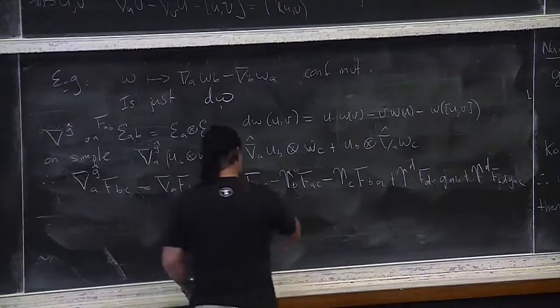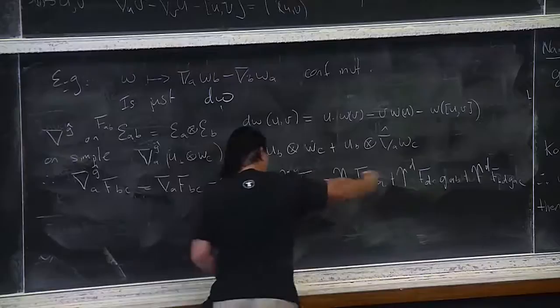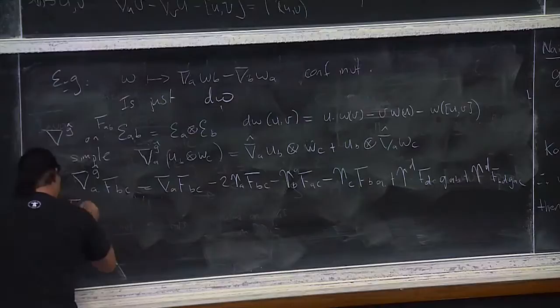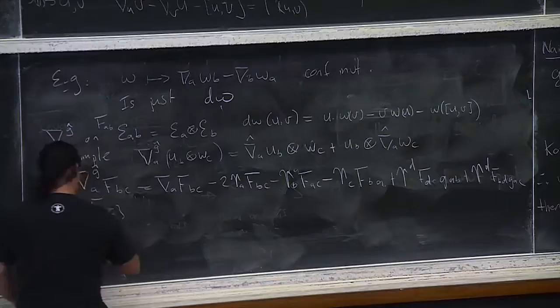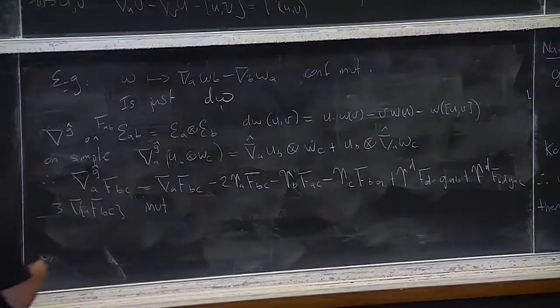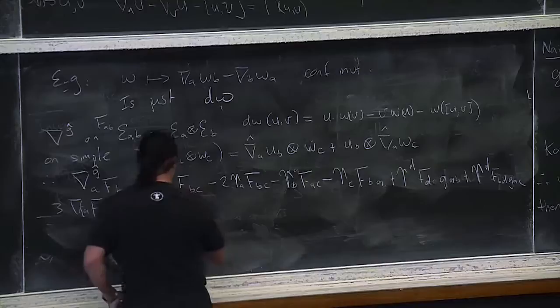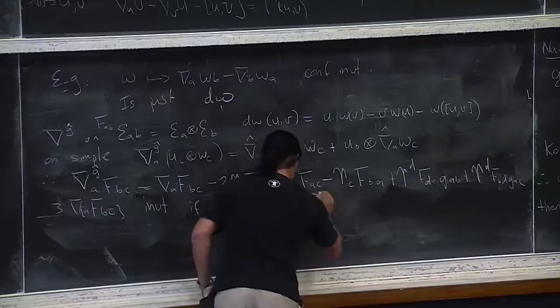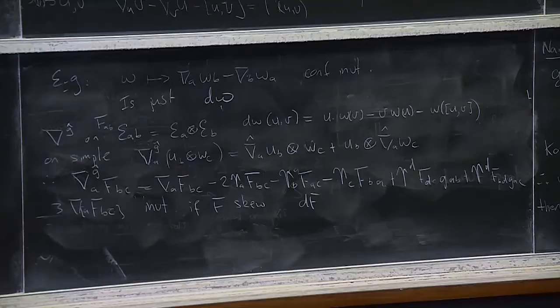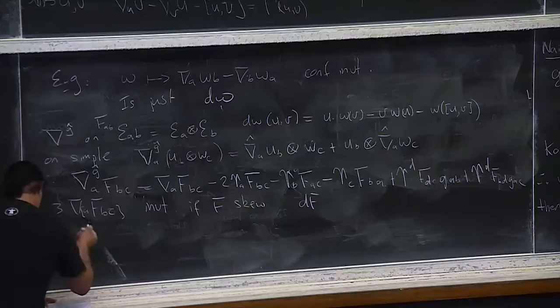Once again you can observe that if you took the skew part on the right-hand side, it would kill all these extra terms. So the antisymmetrized ∇_{[A} F_{BC]} is invariant — conformally invariant. But of course if F was skew, that's just dF, so really the only content here is the observation that the exterior derivative on F is conformally invariant.